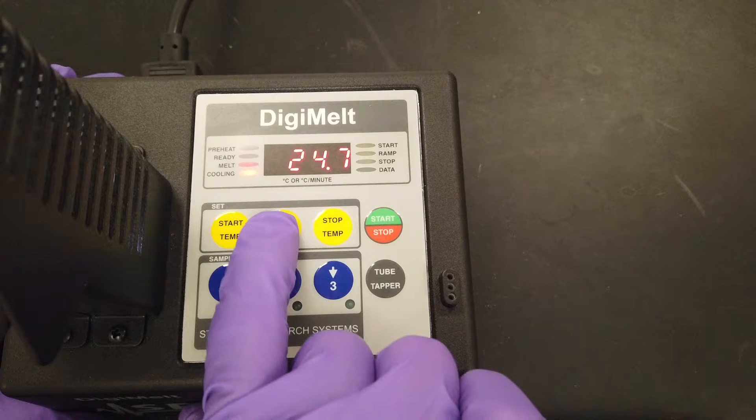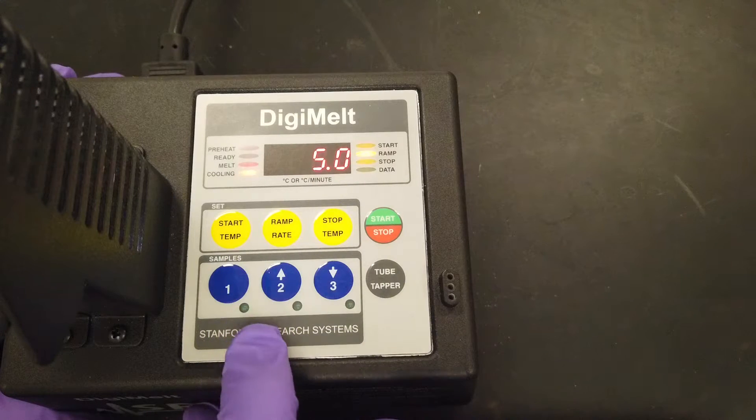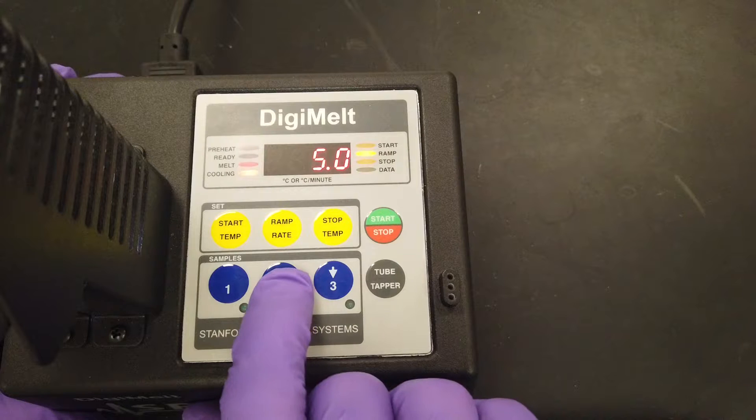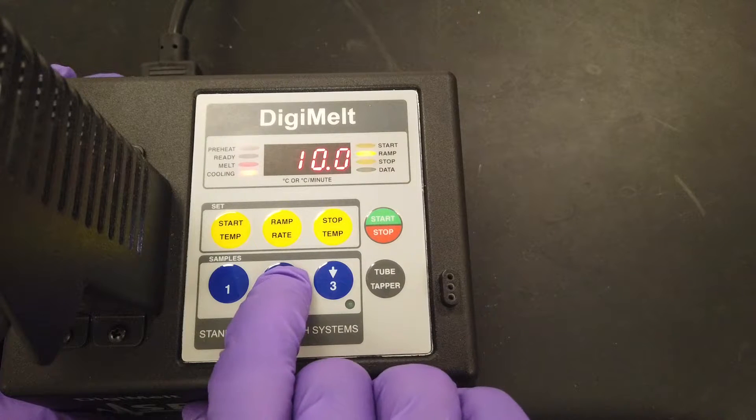Next, press the ramp rate button. Again, press the up or down arrow to select the ramp rate. Typically the slower the ramp rate, the more accurate your measurement. Press the start stop button to confirm.